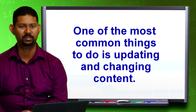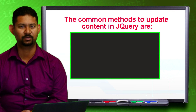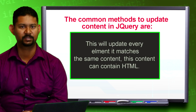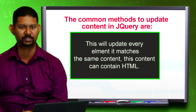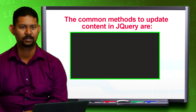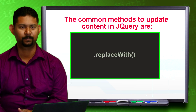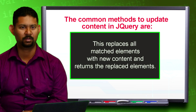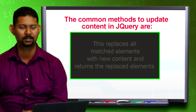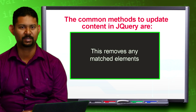One of the most common things to do is updating and changing content. The common methods to update content in jQuery are: .html — this will update every element it matches with the same content, and this content can contain HTML. .text — this will update all matching elements with the same text, and any markup will be shown as text. .replaceWith — this replaces all matched elements with new content and returns the replaced elements. .remove — this removes any matched elements.